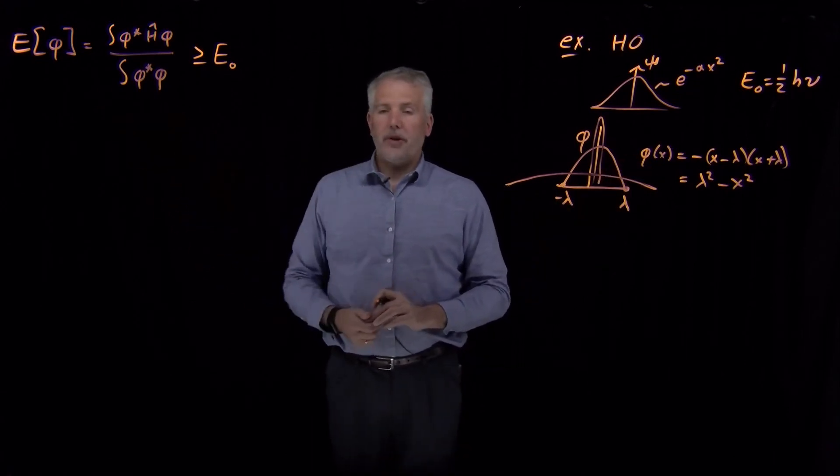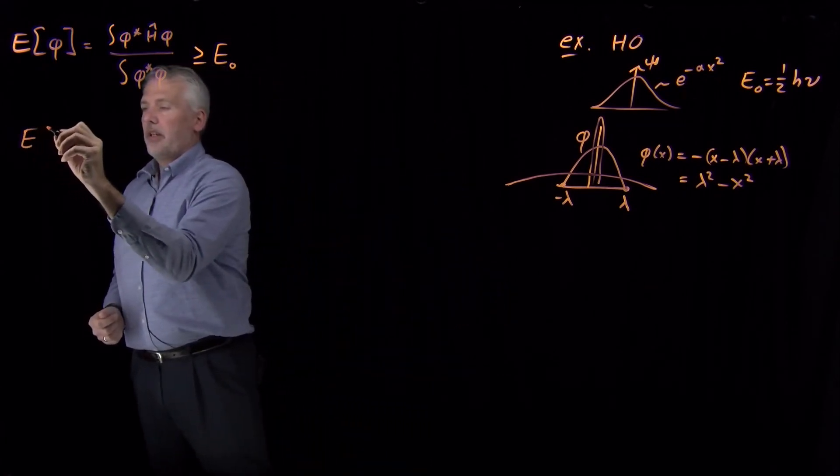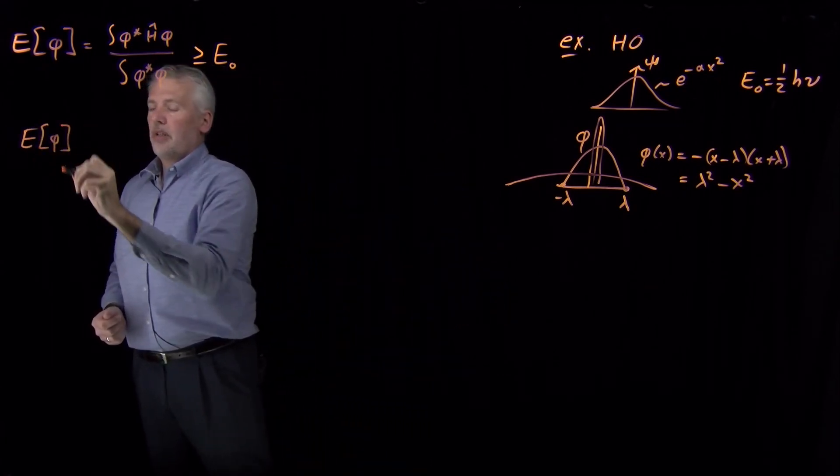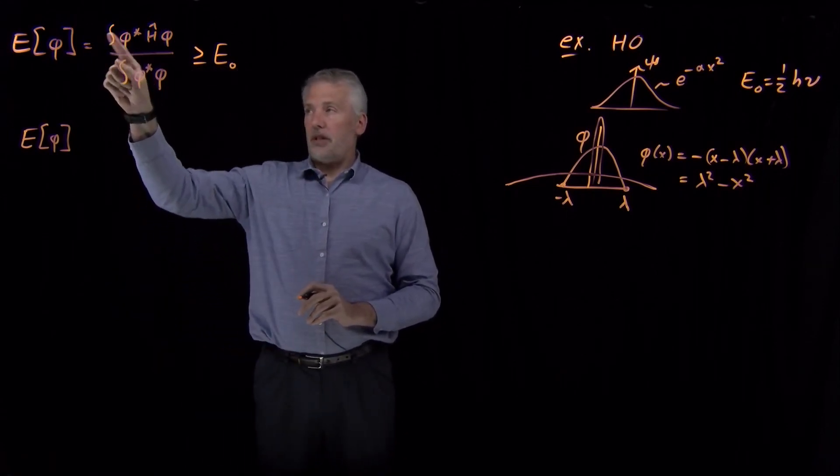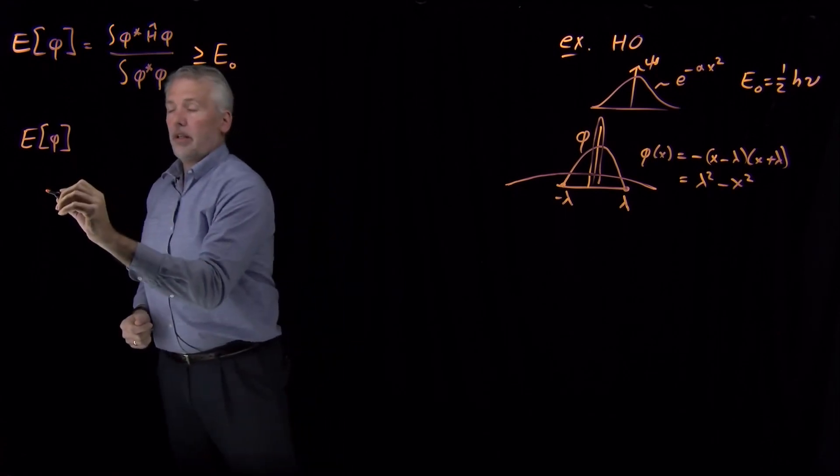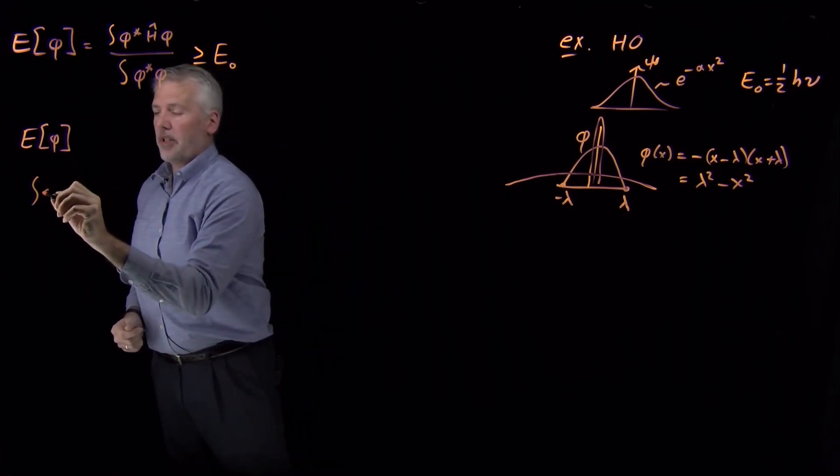We can go back to the variational theorem, and we can say the energy of that particular guess for the wave function is this numerator over the denominator. We can calculate those one at a time, the denominator.